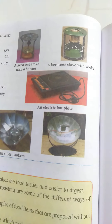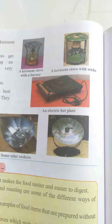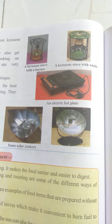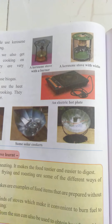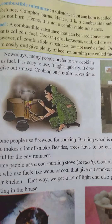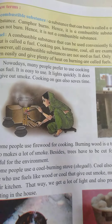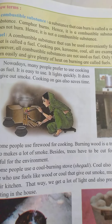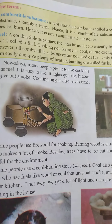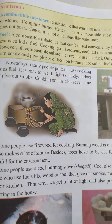Next one is the kerosene stove. Earlier, people used to cook food on chulas, in which they would put firewood. But that makes a lot of smoke, and we have to cut down trees to get firewood.